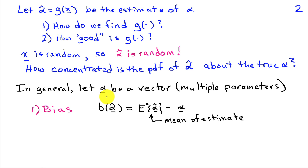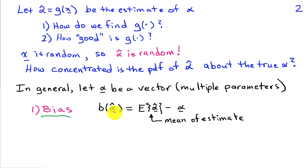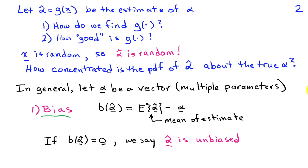We'll assume alpha is a vector of multiple parameters, and alpha hat is also a vector. We define bias as the expected value of alpha hat minus the true value. If the mean value of our parameter estimate equals the true value — bias equals zero — then alpha hat is an unbiased estimator. Generally, we want the mean of our estimate to equal the true value.